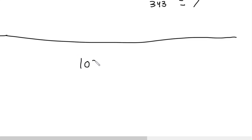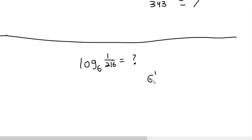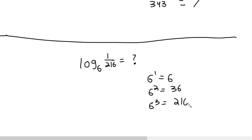So let's say I had log base 6 of 1 over 216 — what does that equal? Well, let's approach this like we normally would. 6 to the 1st gives me 6. 6 squared gives me 36. 6 cubed gives me 216. But we're not getting any fractions here.